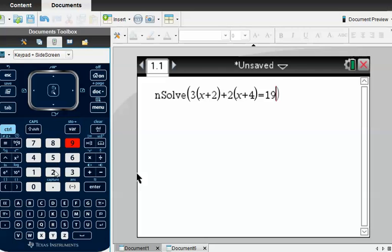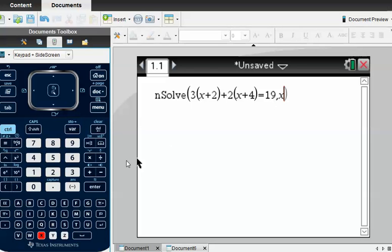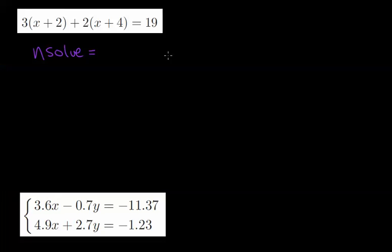What you need to do next is tell the calculator what letter you're solving for. So what you do is you press comma, down here, comma, and x. Don't forget to do this, otherwise you get an error. Press enter. One. So that's what x equals, x has to equal one to satisfy this equation.